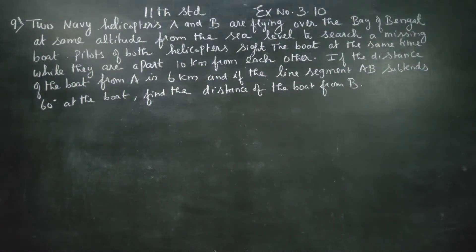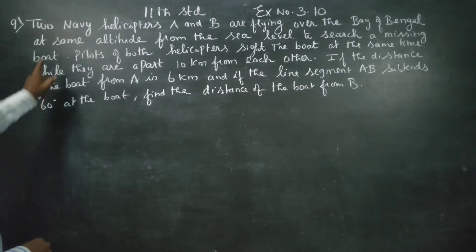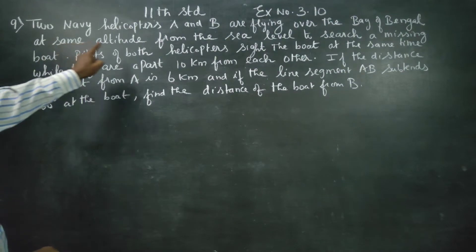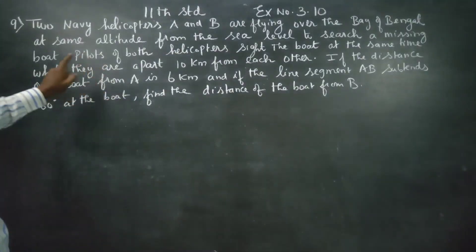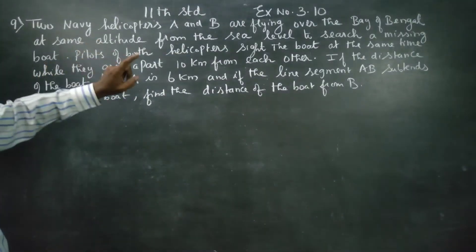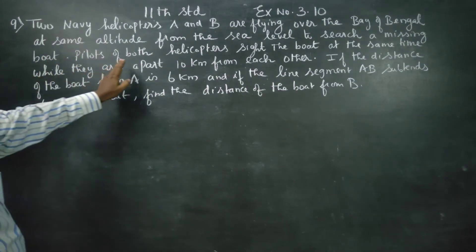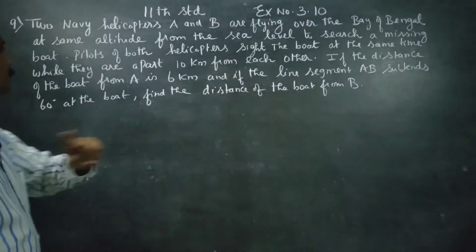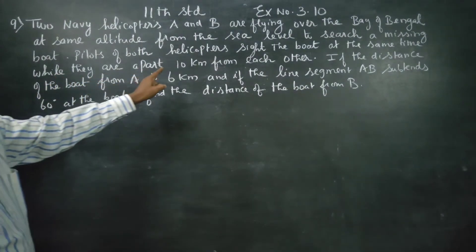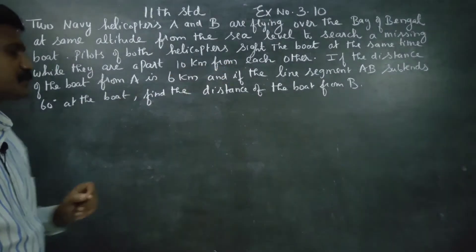Hello 11th standard students. In exercise number 3.10, two navy helicopters A and B are flying over Bay of Bengal at the same altitude from sea level to search a missing boat. Pilots of both helicopters sight the boat at the same time while they are apart 10 kilometers from each other.